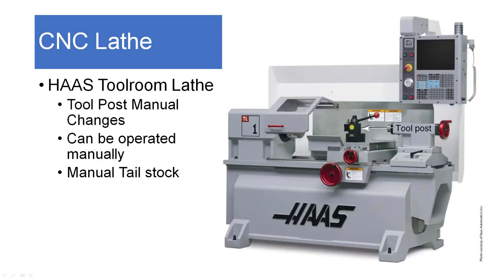Here's an example of a CNC lathe. The red handles are places where a human can grab, turn, and adjust the lathe while reading the display — they also turn automatically when the machine is computer-controlled. The tool post looks very similar to a wedge-style or Aloris-style tool post from a manual lathe, and it has a manual tailstock, so it's very similar to the manual lathe you're familiar with.